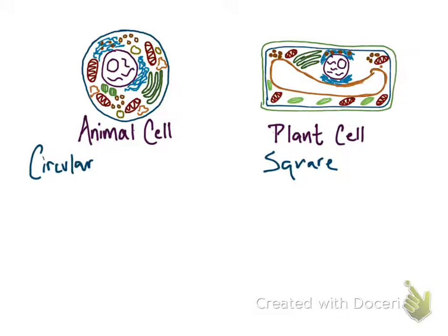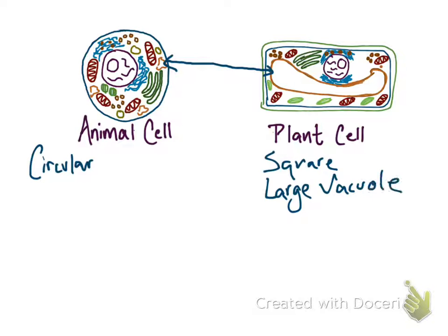Next, you're going to notice this organelle specifically — the vacuole, which is much smaller in the animal cell. However, it's very large in the plant cell. The reason is because the plant cell stores a lot of water, because that's one of the most vital nutrients for the plant. In order to accommodate all that water, the plant cell needs a larger vacuole. That's our next difference: a large vacuole for the plant cell and a smaller vacuole for the animal cell.